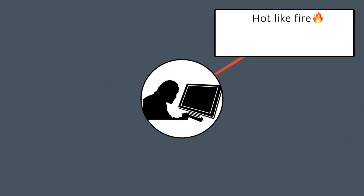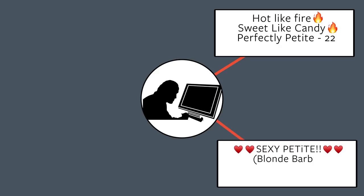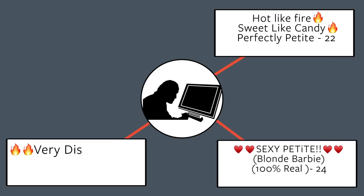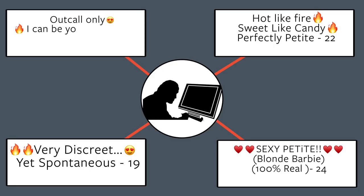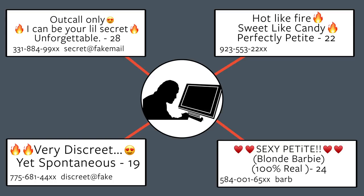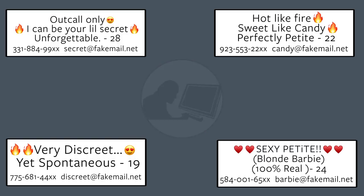A trafficker posting advertisements about the girls that he is in charge of would want to disguise that information somehow, so that the girls don't appear to be minors and that these are all independent people working separately. To that end, you have traffickers using burner phones as the contact information. Obviously you can switch email addresses with very little cost — doing things like that in order to try and minimize the connection between these ads.